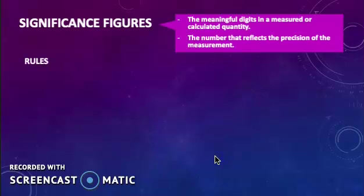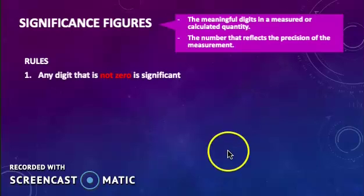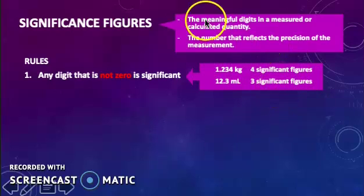Rule number 1, any digit that is not 0 is significant. Thus, 1.234 kilogram has 4 significant figures, 12.3 milliliter has 3 significant figures.